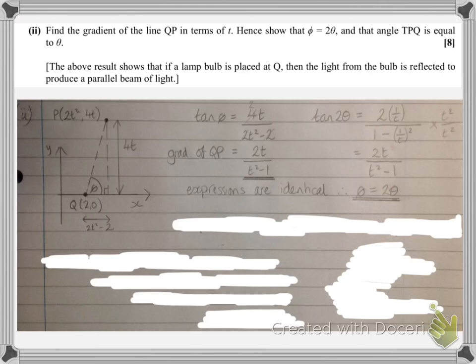So 2theta must be equal to phi, because we've got that tan phi and tan 2theta give us the exact same result, so the phi and the 2theta must be equal.